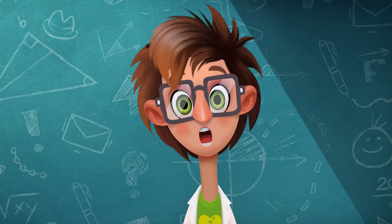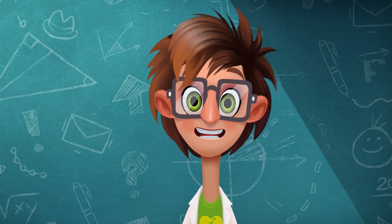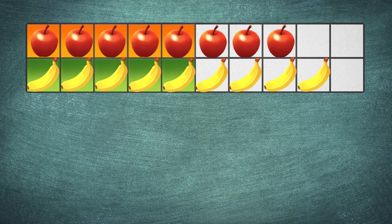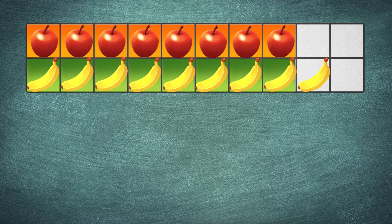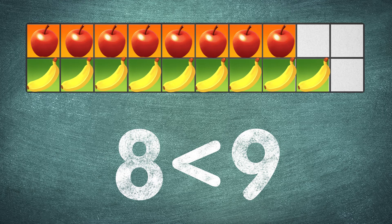Do we have more apples or bananas? One, two, three, four, five, six, seven, eight, nine. Eight apples is fewer than nine bananas. We can show that with the less than sign.